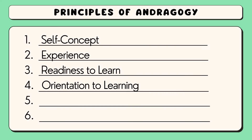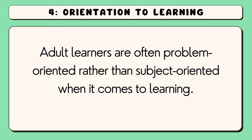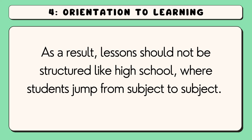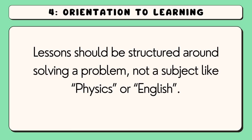The fourth principle is orientation to learning. Adult learners are often problem-oriented rather than subject-oriented when it comes to learning. As a result, lessons should not be structured like high school, where students jump from subject to subject. Lessons should be structured around solving a problem, not a subject like physics or English.